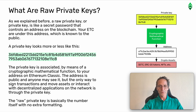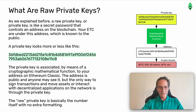What are raw private keys? A raw private key or private key is like a secret password that controls an address on the blockchain. Your ETC are under this address which is known to the public. A private key looks more or less like this. The private key is associated by means of a cryptographic mathematical function to your address on Ethereum Classic. The address is public and anyone may see it, but the only way to sign transactions and move assets or interact with decentralized applications on the network is through the private key. The raw private key is basically the number itself with no extra formatting.